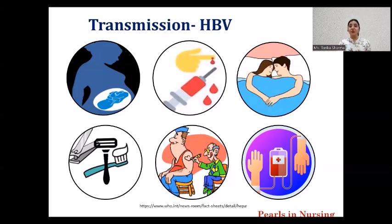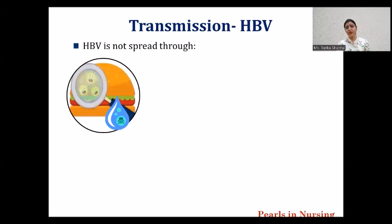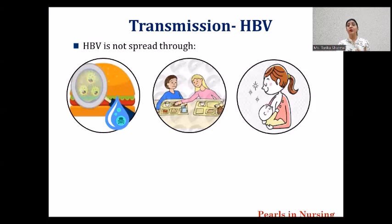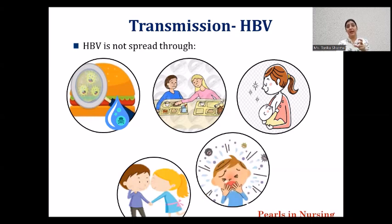Along with knowing the transmission routes, it is important to know the routes by which Hepatitis B virus does NOT spread, so we can pass correct information to our patients and families, and thereby decrease the myths, misconceptions, and stigma associated with the disease. Hepatitis B cannot be spread through contaminated food or sharing of food, breastfeeding, hand-holding or handshaking with an infected person, or coughing and sneezing. It is our responsibility to disseminate the correct information to the community at large.